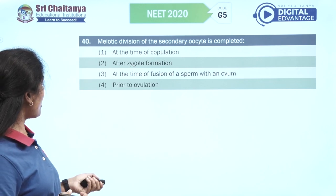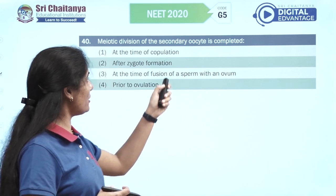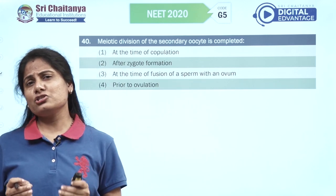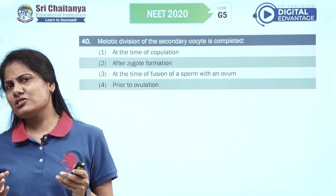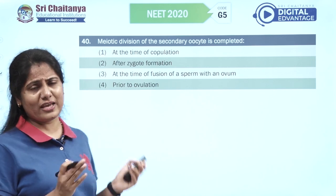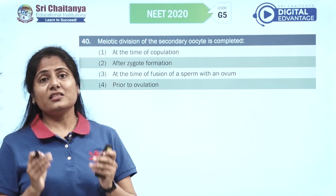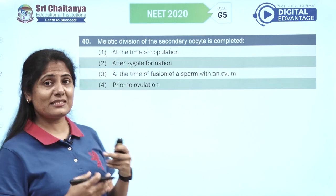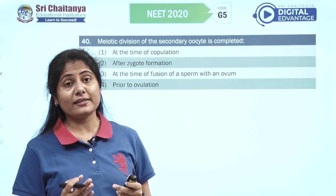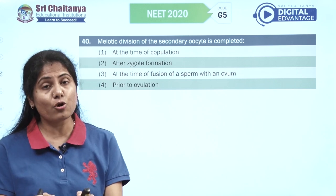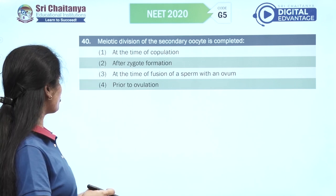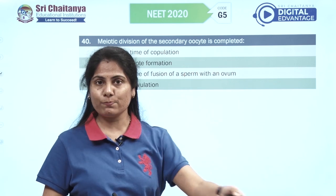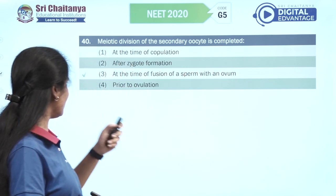The meiotic division of the secondary oocyte is completed — from human reproduction, a very straightforward question. The secondary oocyte completes its division finally after the entry of the sperm. So at the time of fusion of sperm with the ovum is your answer.